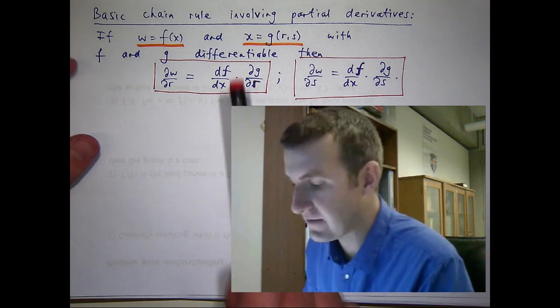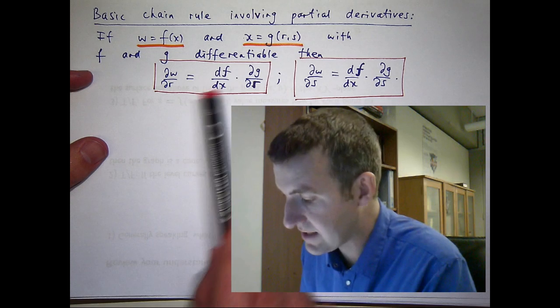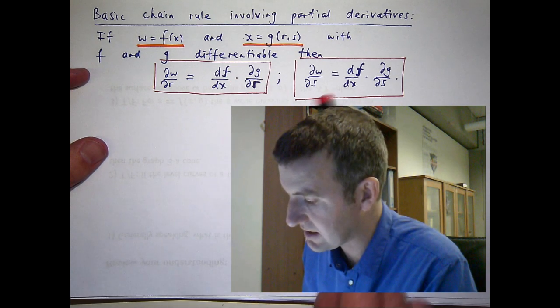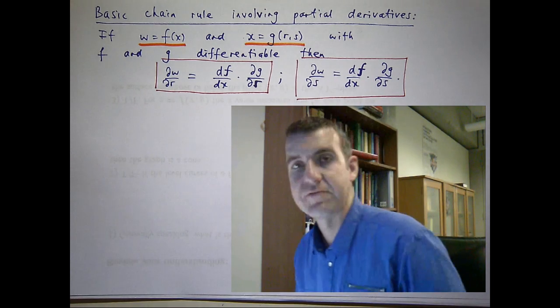Then they are respectively the following products: df/dx, where this is just the regular derivative of a function of one variable, times this derivative here, dg/dr. And dw/ds is the product of these derivatives.